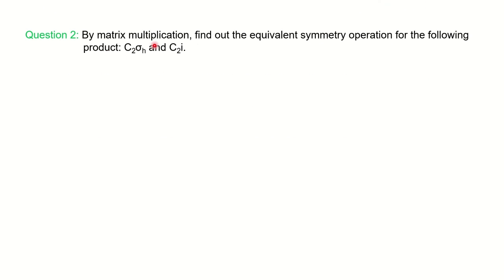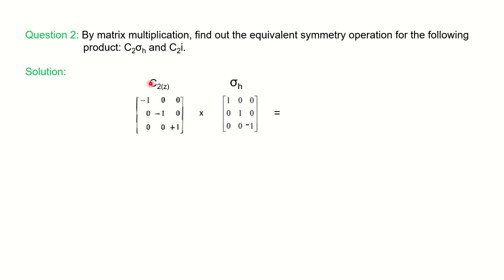Next problem: by matrix multiplication, find out the equivalent symmetry operation for the following products — C2 × σH and C2 × I. We write the matrix for each operation and find what the result corresponds to. For C2 × σH: C2Z has −1 for X and Y and +1 for Z; σH (XY plane) has +1 for X and Y and −1 for Z. Multiplying gives all −1, which is the inversion operation I. So C2 × σH = I.